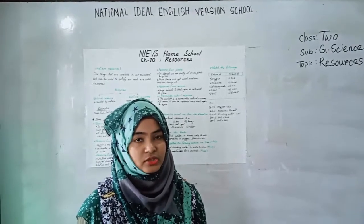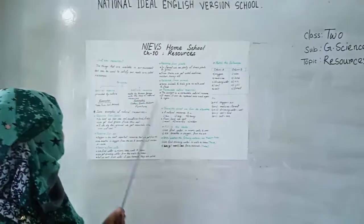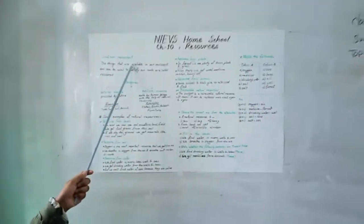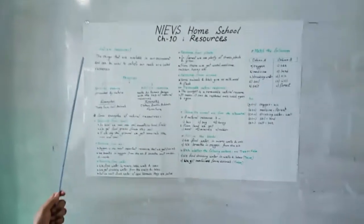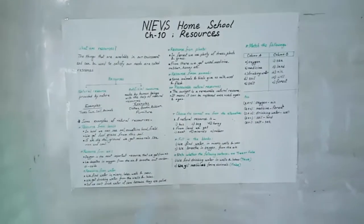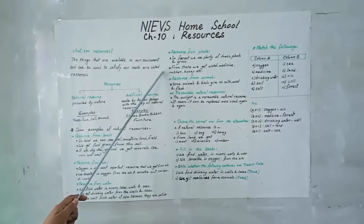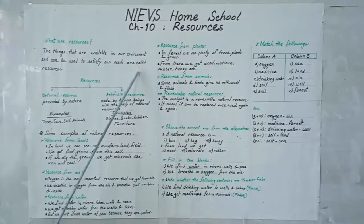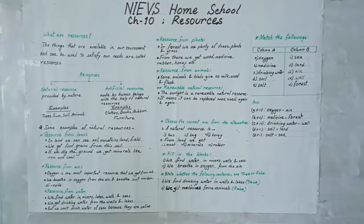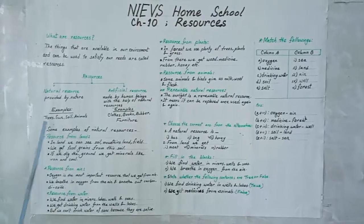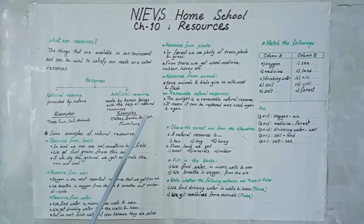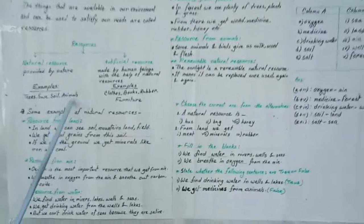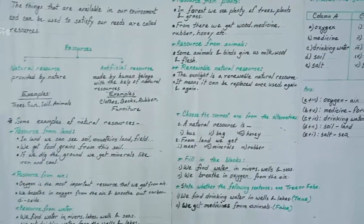First we learn what are resources. The things that are available in our environment and can be used to satisfy our needs are called resources. For example, trees, sand, books, crops, rubber, furniture, animals, birds, etc.